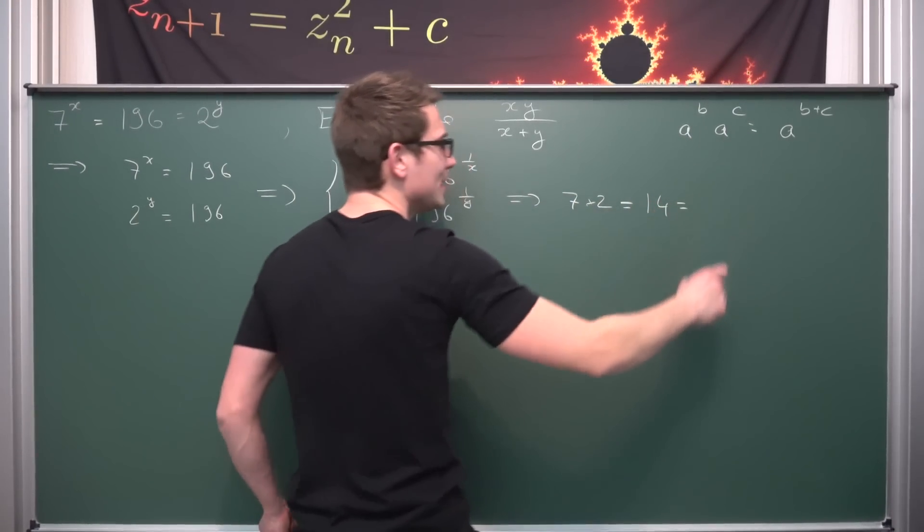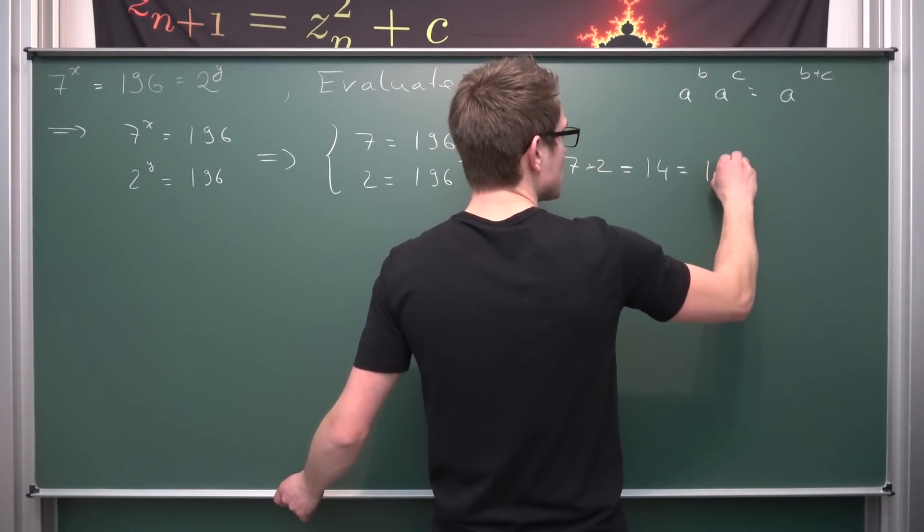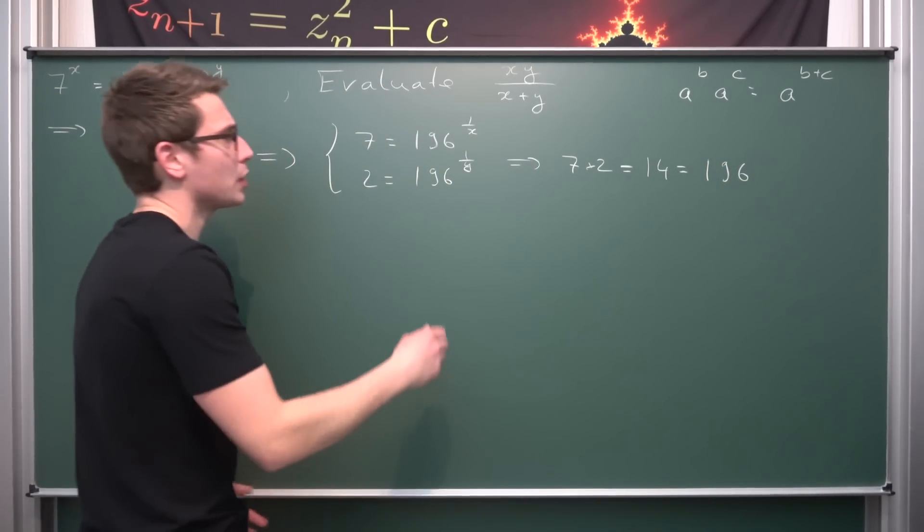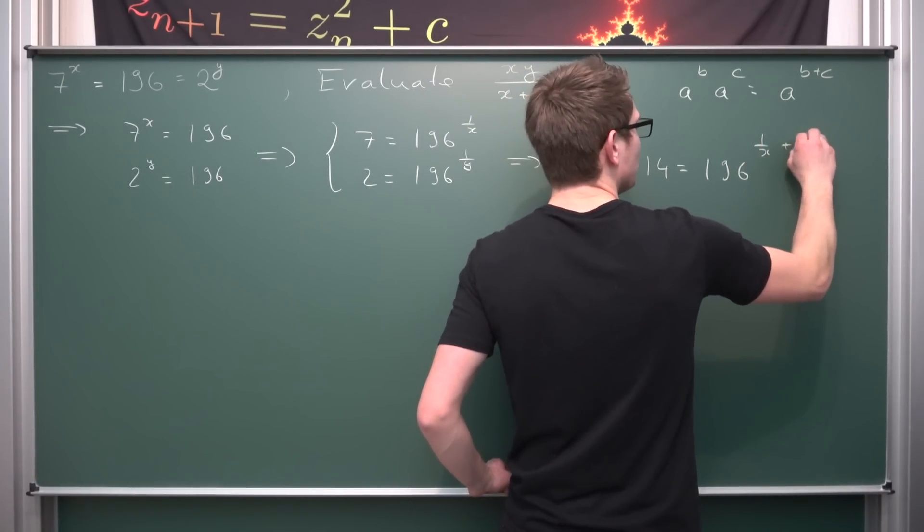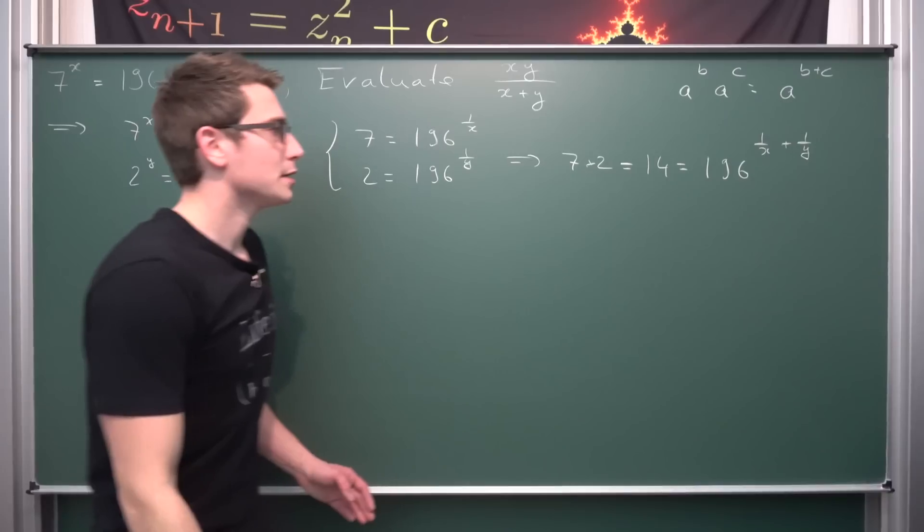By this rule that we have up here, the exponentiation rule, we have the same base. We can bring it together. And now what we are going to do is add the exponents together. So 1 over x plus 1 over y.